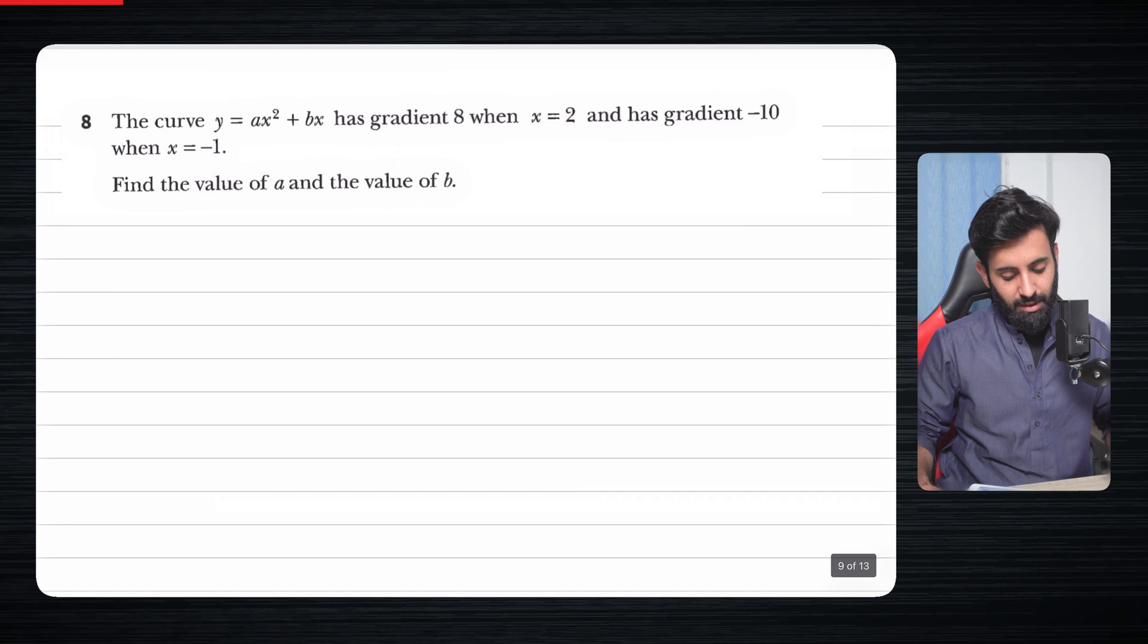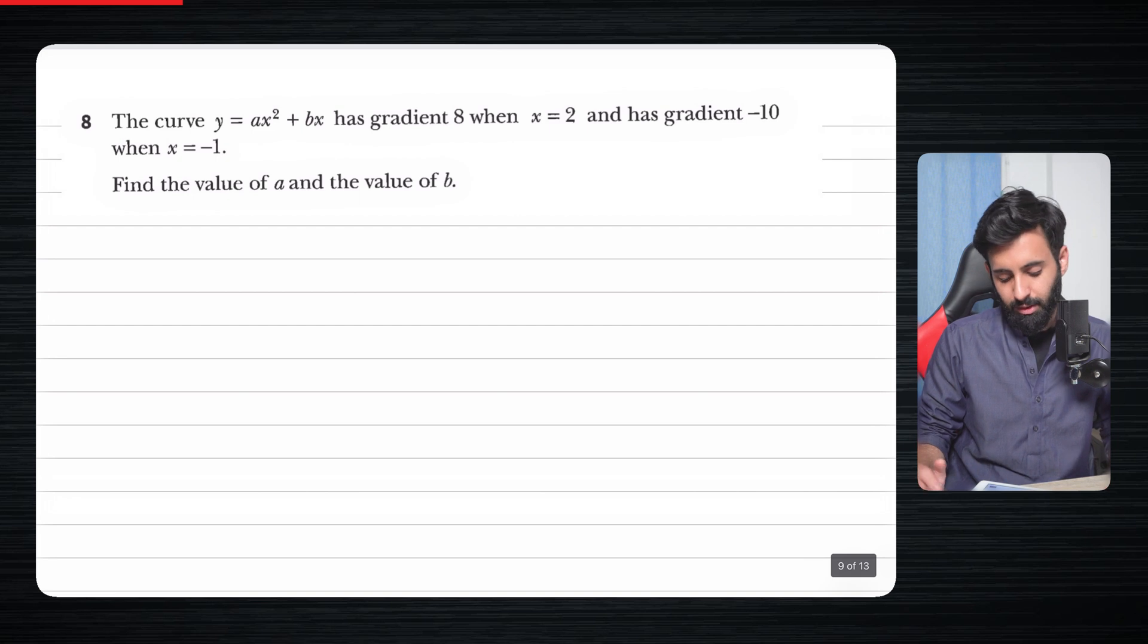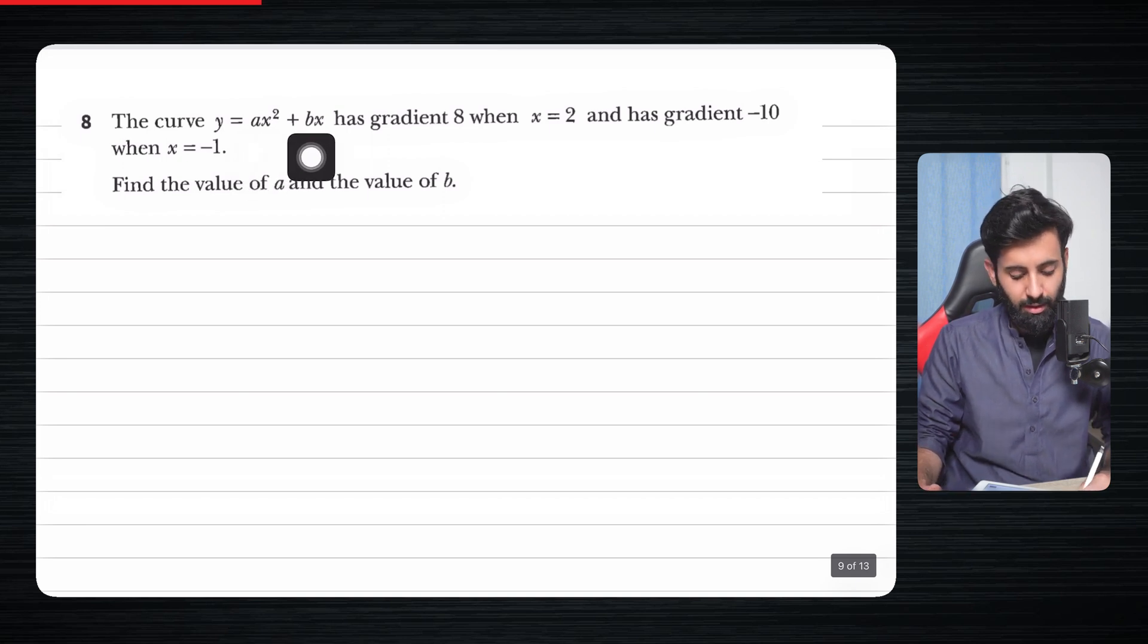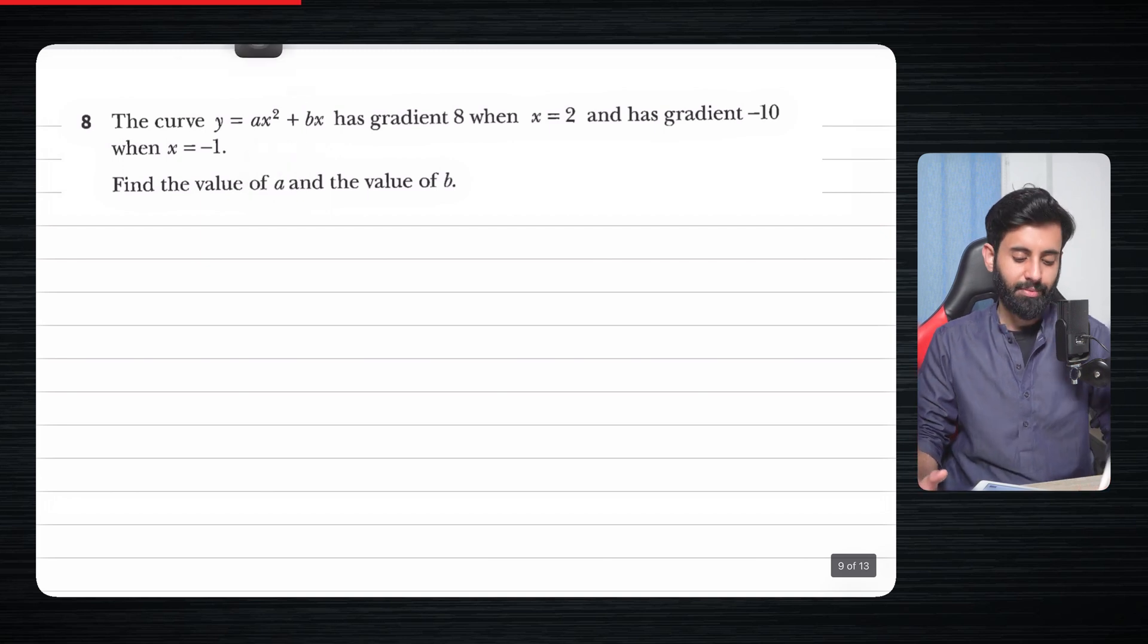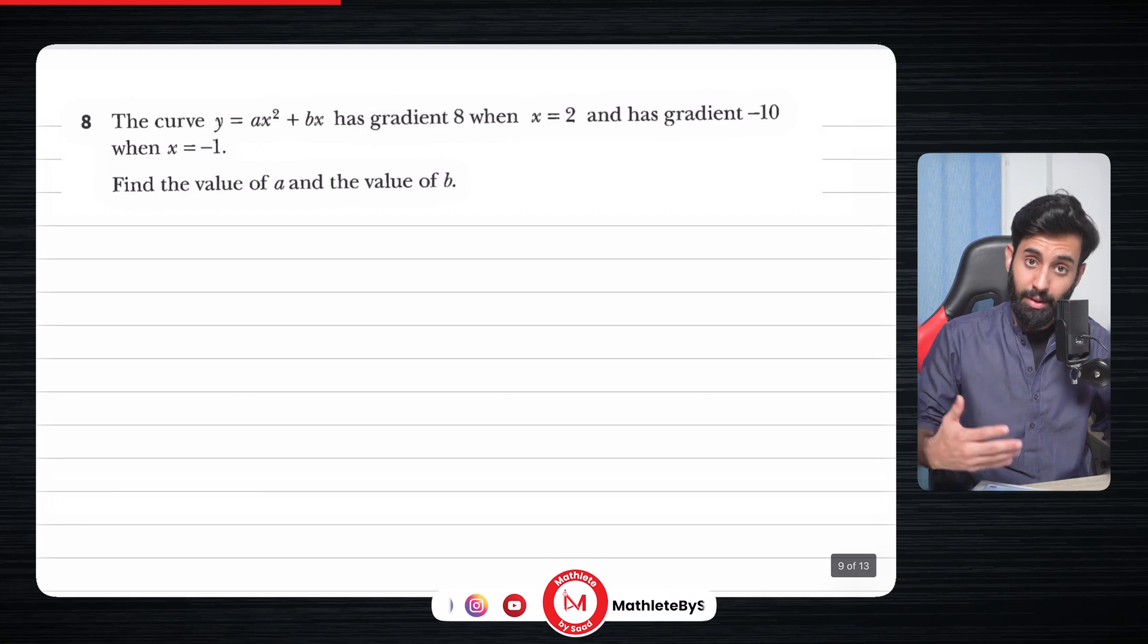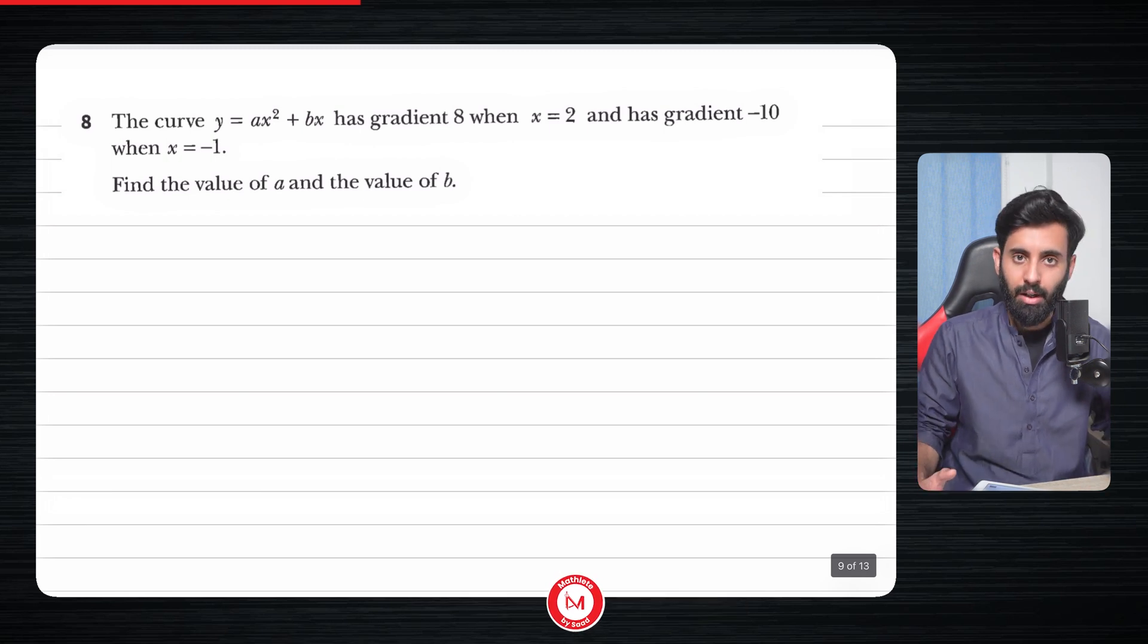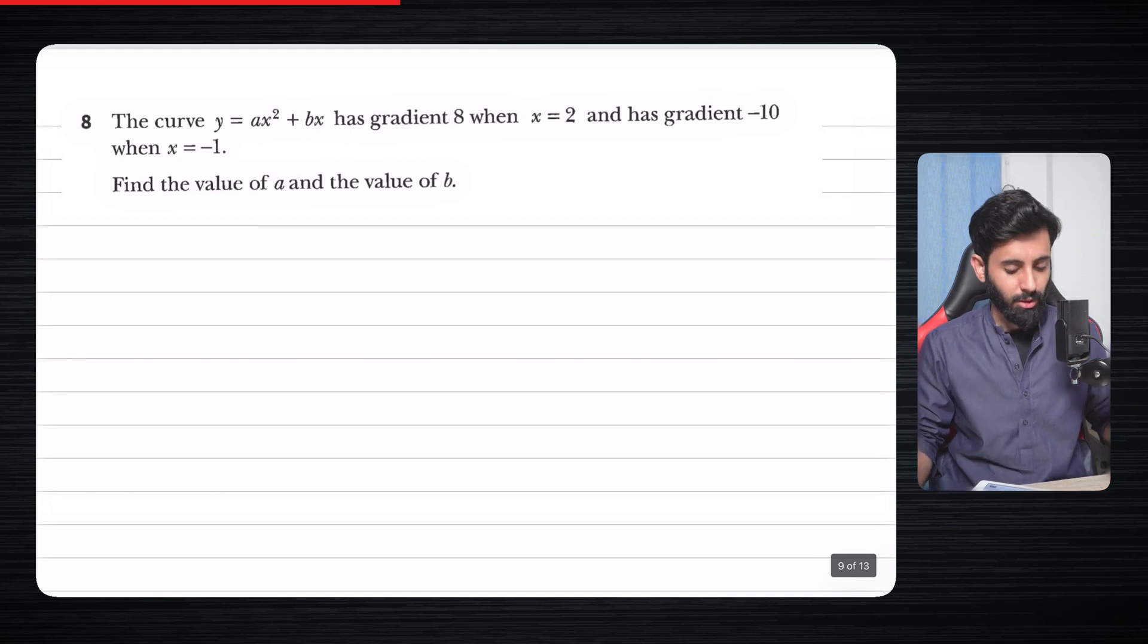This question says the curve y equals ax squared plus bx has gradient 8 when x equals minus 2 and has gradient minus 10 when x equals minus 1. Now, if you look at this equation closely, other than x and y, you can see that you have two unknowns: one is a and the other is b. Usually when that happens, that means we are likely to end up with two equations which we're then going to solve simultaneously in order to find the value of a and b.